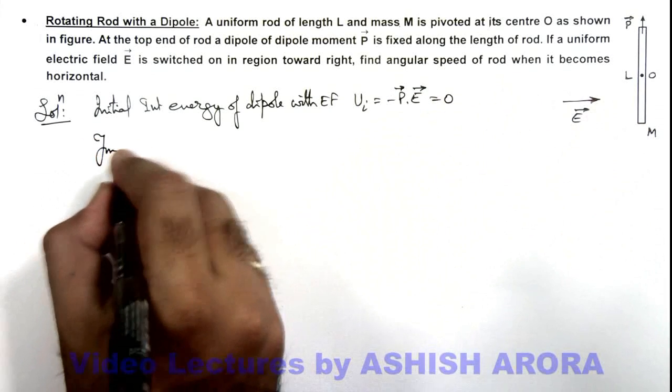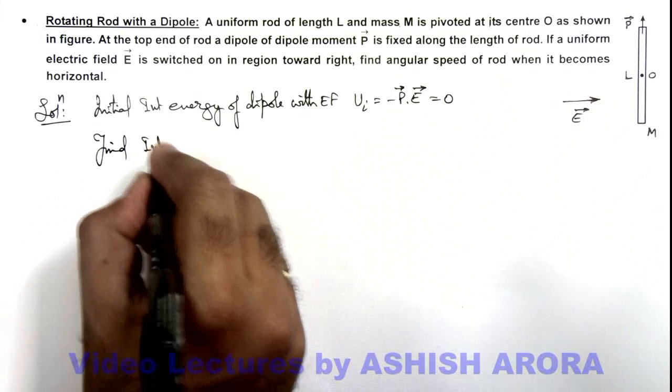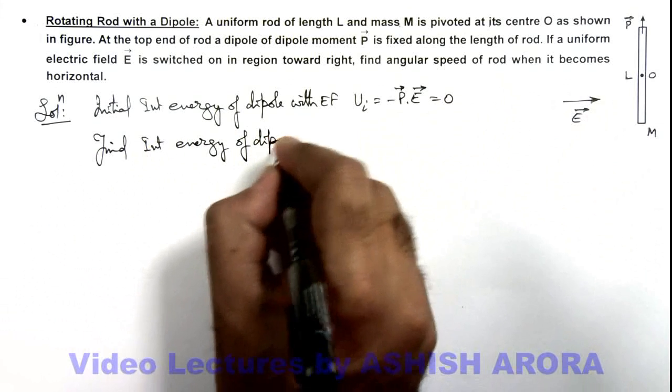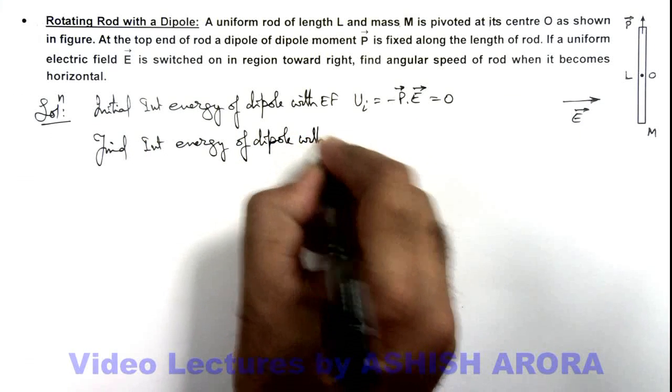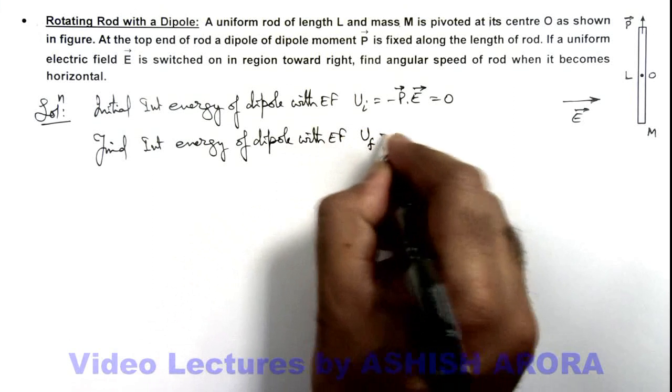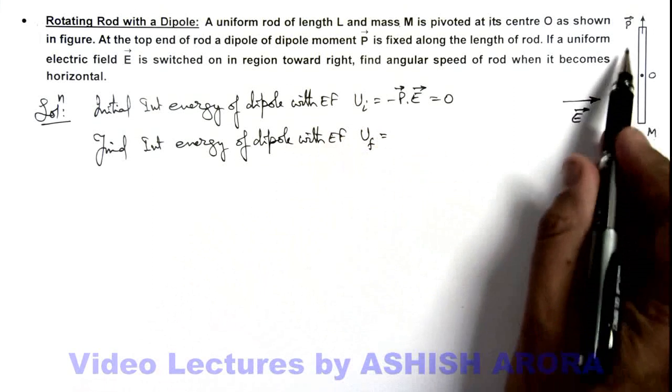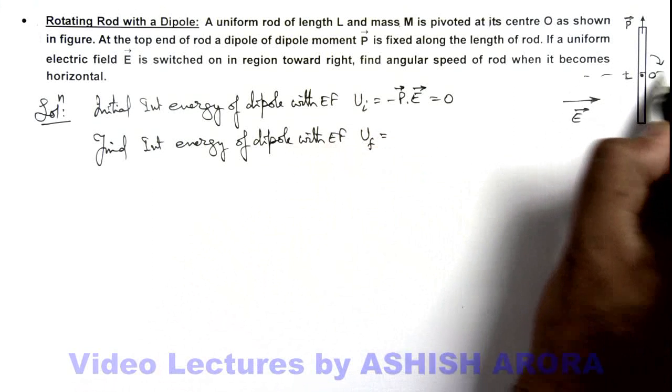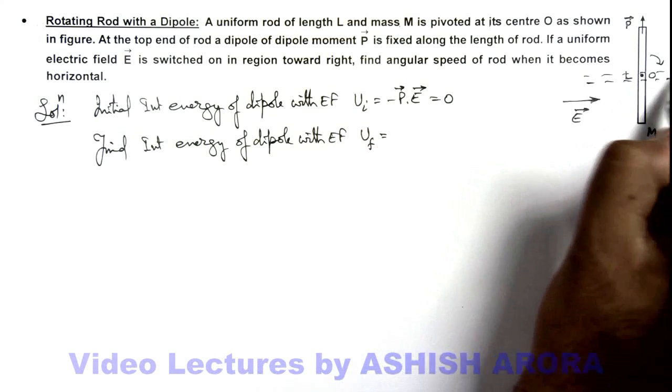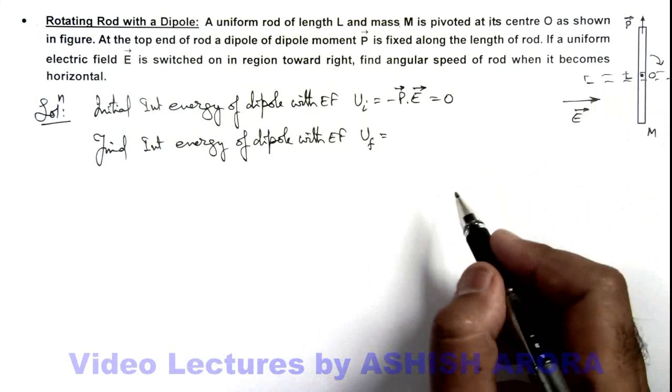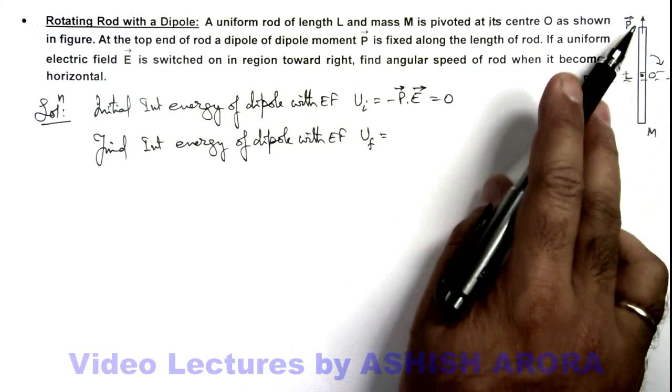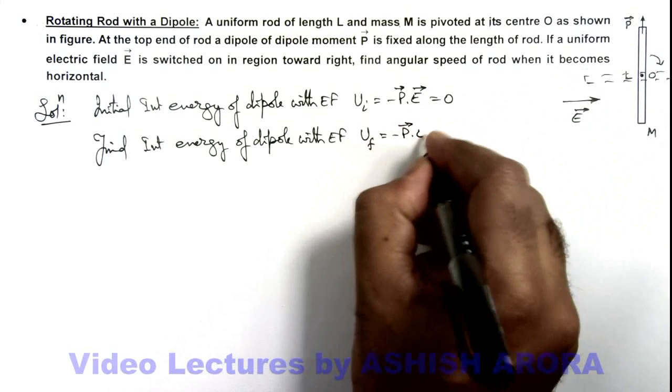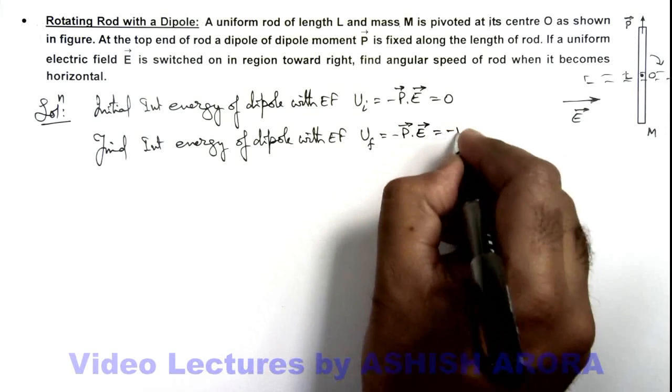Further, if we calculate the final interaction energy of dipole with electric field, U final can be calculated when the rod becomes horizontal after rotating by 90 degree. In the final state, after rotating by 90 degree, the angle between P and E is zero degree, so we can write it as minus P dot E, which is equal to minus PE.